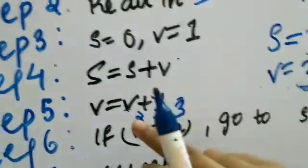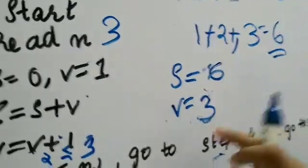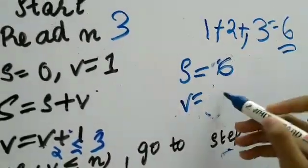Now, next step, v is equal to v plus 1. What is the current v? Current v is 3. So 3 plus 1, we will get it as 4.